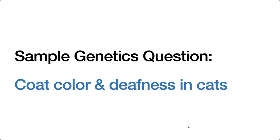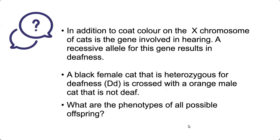Here is a sample genetics question for coat colour and deafness in cats. In addition to coat colour, on the X chromosome of cats is the gene involved in hearing. A recessive allele for this gene results in deafness. A black female cat that is heterozygous for deafness is crossed with an orange male cat that is not deaf. What are the phenotypes of all possible offspring?